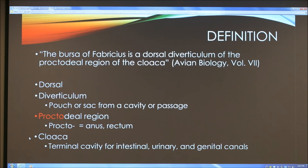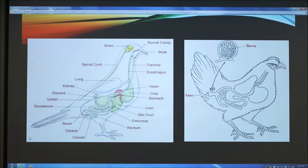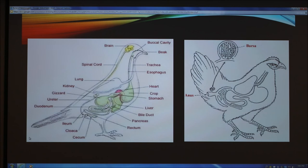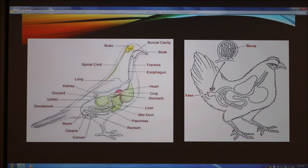The bursa of Fabricius can also be shortened to just bursa, meaning just the organ. These diagrams show the anatomical location of the bursa and other significant body parts in an avian. The picture on the left shows the cloaca. Based on the definition, the bursa should be near the cloaca but on the dorsal side. Looking at the diagram on the right, we see that the bursa is in fact near the anus and on the dorsal side of the bird, with the cloaca right underneath it.